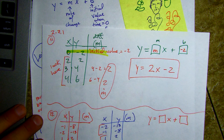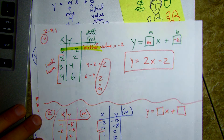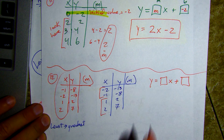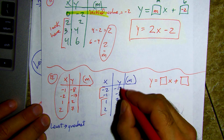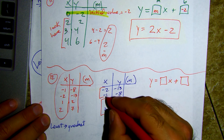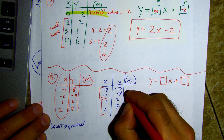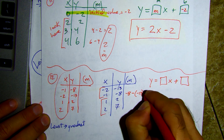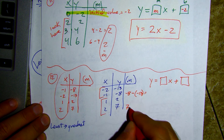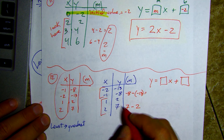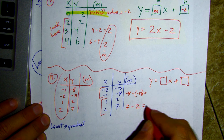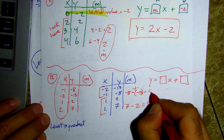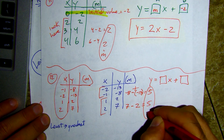Now I have it set up where I can look and see what the difference is between negative one and negative two. Negative eight minus negative thirteen — we end up adding and get positive five. From one to two we went from two to seven, so we have five again. What we just found was our slope.